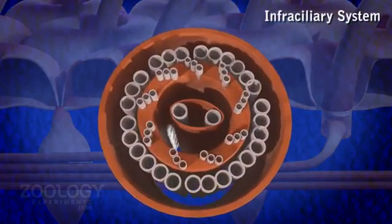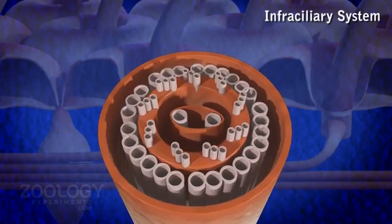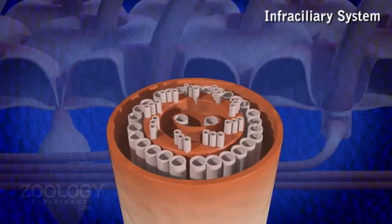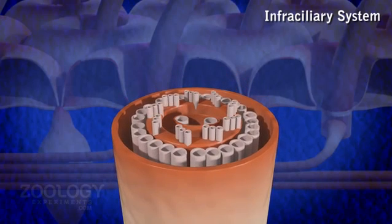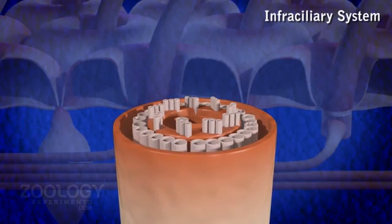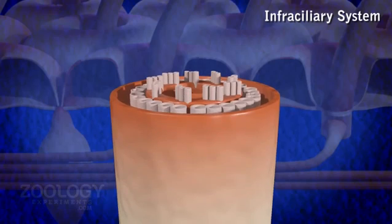Infra-cellular system. At the beneath of pellicular alveoli, the infra-cellular system constituted by the basal bodies and kinetodesmata. Basal bodies. The base of each cilium is produced into a tube-like structure called basal body or kinetosome.